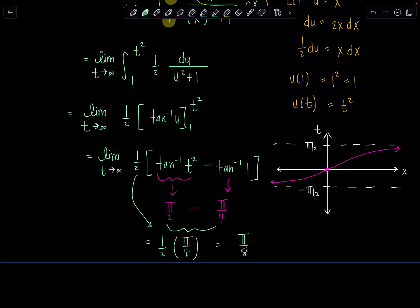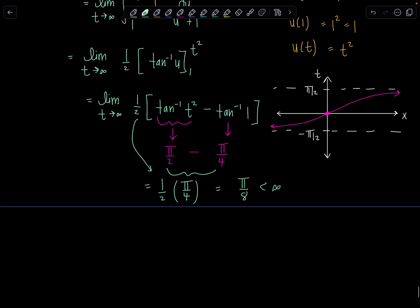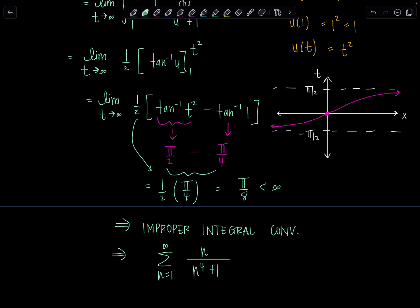When we do the integral test, we don't care what value the improper integral comes out to — all we care is whether or not it's finite, which it is. It's less than infinity, which tells me that the improper integral converges. And that tells me that my original series — the sum n equals 1 to infinity of n over n to the 4th plus 1 — also converges by the integral test.